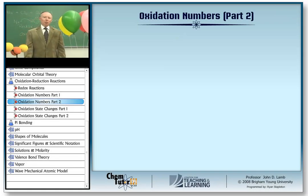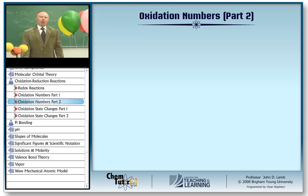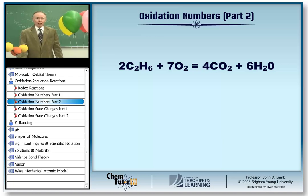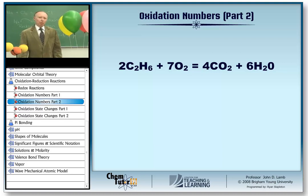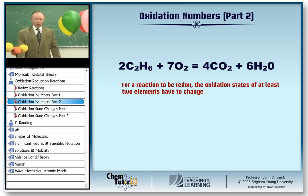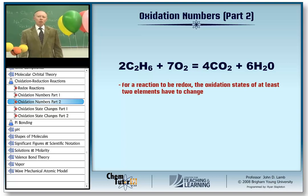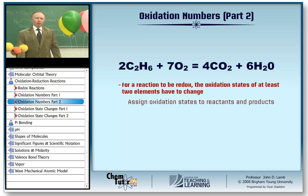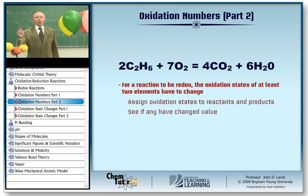I promised that once we had some rules for assigning oxidation states, I'd show you that this combustion reaction is really a redox reaction. It's time to keep that promise. There's one simple principle you need to understand: in order for the reaction to be the redox type, the oxidation states of at least two elements have to change. An easy way to tell whether a reaction is redox is to assign oxidation states to all the elements in the reactants and products and see if any have changed value.